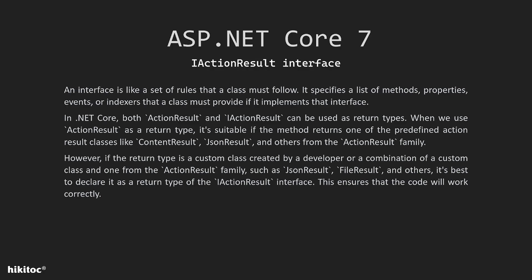ActionResult and IActionResult can both be used as return types. When we use ActionResult as a return type, it's suitable if the method returns one of the predefined ActionResult classes like ContentResult, JsonResult, and others from the ActionResult family. However, if the return type is a custom class created by a developer, or a combination of a custom class and one from the ActionResult family such as JsonResult or FileResult, it's best to declare it as a return type of the IActionResult interface.